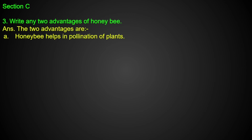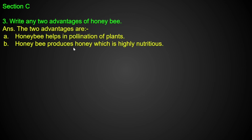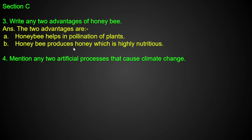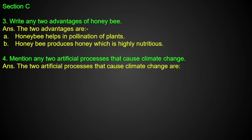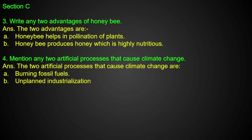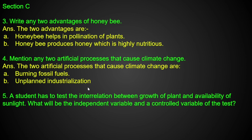Bees help in the pollination of plants, which is very nutritious. There are two artificial processes that cause climate change: burning fossil fuels and industrialization.